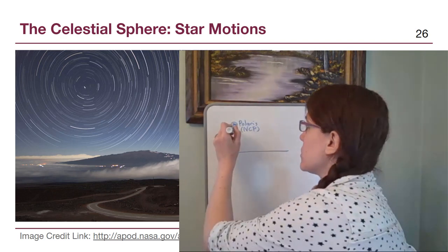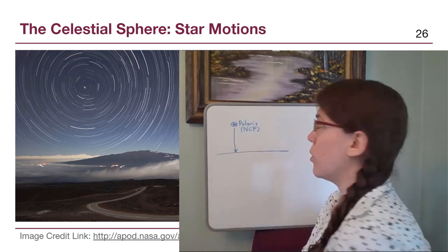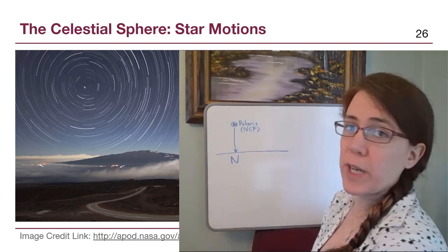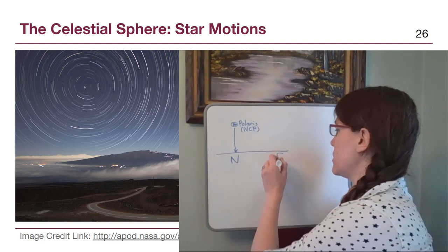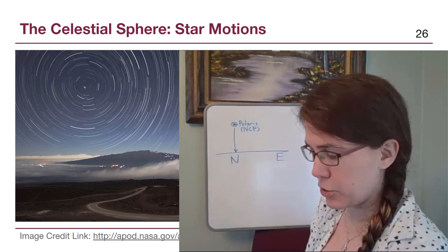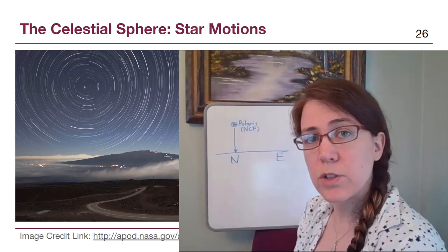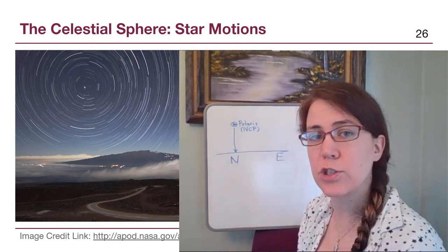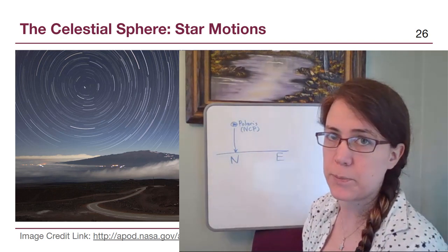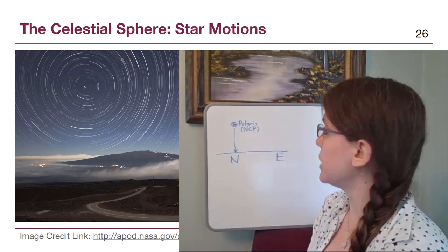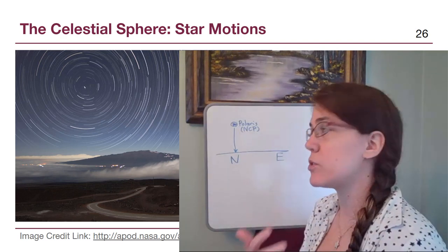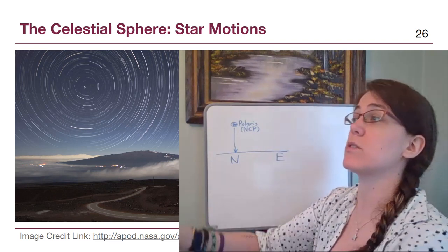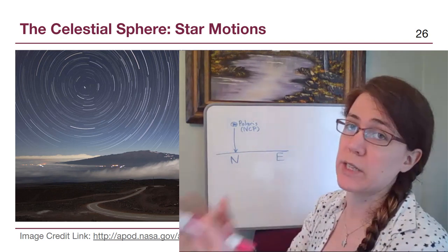When we look at Polaris and the NCP, North Celestial Pole, roughly at that same spot, we can call those almost interchangeable because from this real picture we can see they are very close together. When we look directly below where Polaris is, that is where our compass North is. If we're facing north, then to our right is east and to our left would be west.